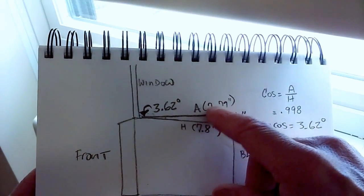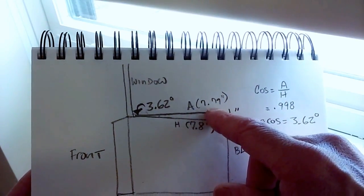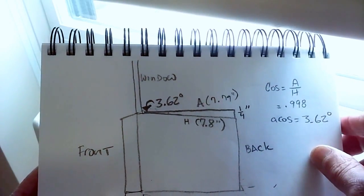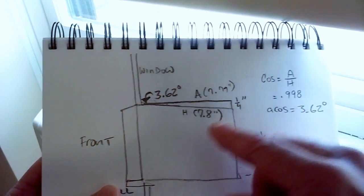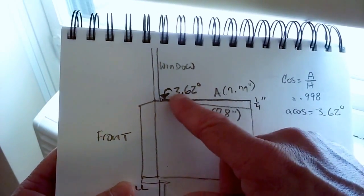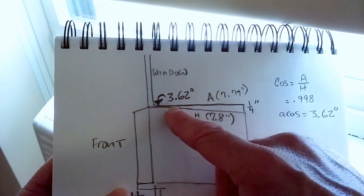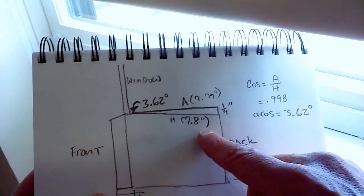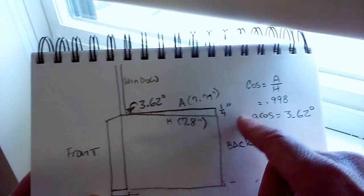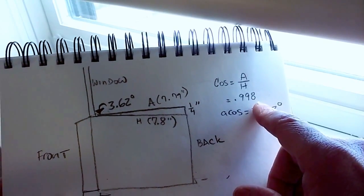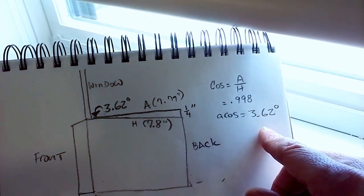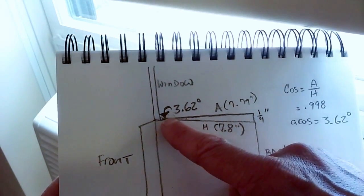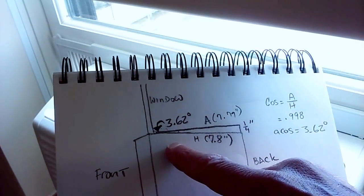So solving for the adjacent side via the Pythagorean theorem, I'm getting 7.79 on the adjacent side. And then I want that angle right there, so solving for cosine — adjacent divided by hypotenuse — I'm getting cosine 0.998, and the arc cosine of that being 3.62 degrees at that angle.